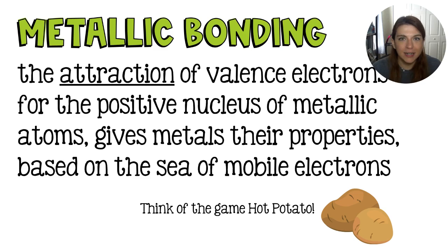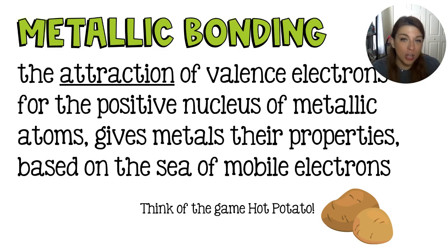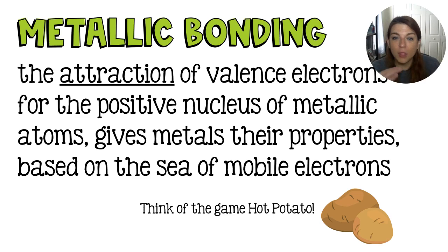Metallic bonding in a nutshell — it's not really a bond, as strange as that sounds. We have the valence electrons being attracted to the nuclei of not just one atom, but all of the other atoms that are nearby. This is how metals get their properties of being shiny, able to conduct electricity, and being malleable and ductile. All of that comes from the fact that these electrons are constantly swimming around. A lot of the time we use the key phrase: they have a sea of mobile electrons.